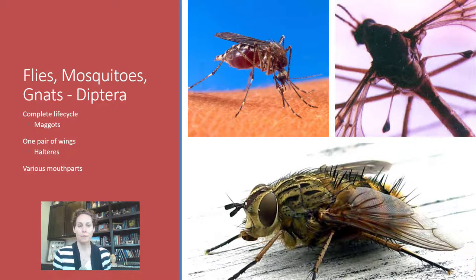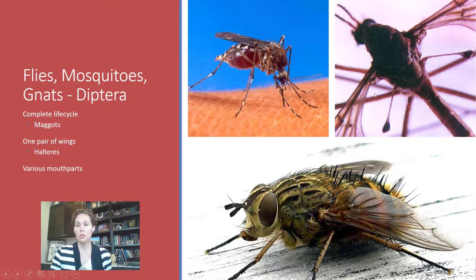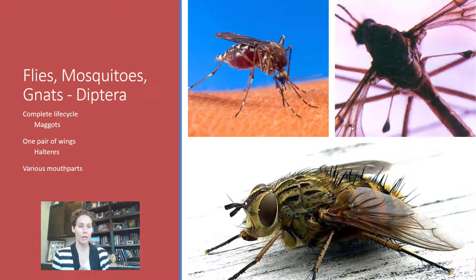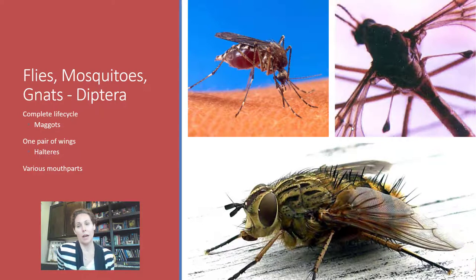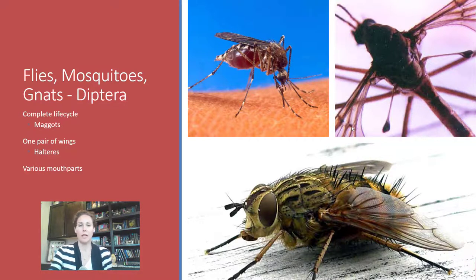'Di' means two and 'ptera' means winged, so these are two-winged insects with only one pair of wings — their front wings. Their hind wings are modified into something called halteres. You can see very exaggerated large halteres on the crane fly in the top right picture — those help maintain balance like rudders on a plane. They have a complete life cycle, and we call their larvae maggots. Dipterans have a variety of mouthparts: mosquitoes have sucking, house flies have sponging, and horse flies have biting mouthparts.